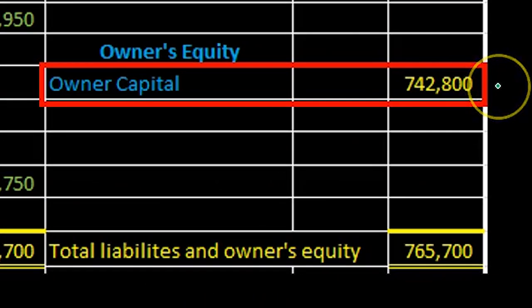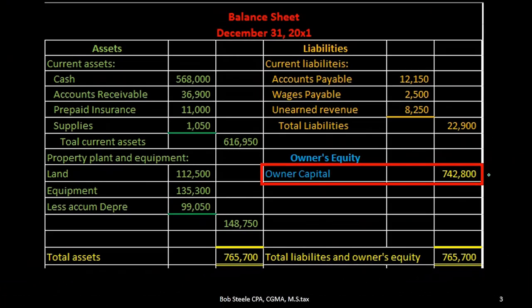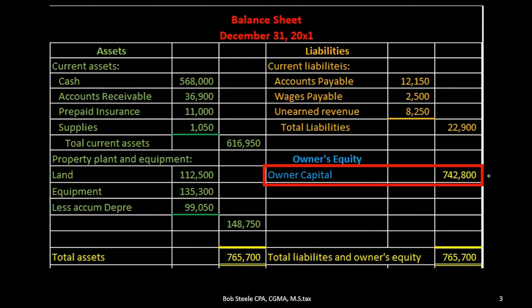This is what it's going to be as of the end of the time period, and we want to break out the detail of it — which includes mainly the income statement, which we've talked about prior — and then the statement of owner's equity, which will tie in the income statement and take care of any other type of accounts such as draws.